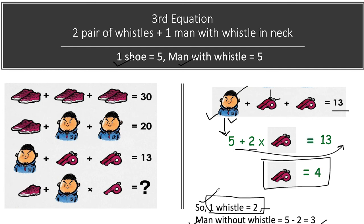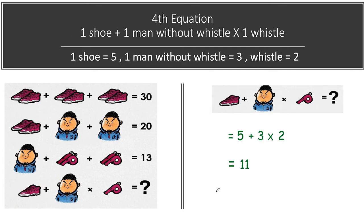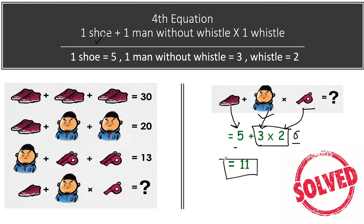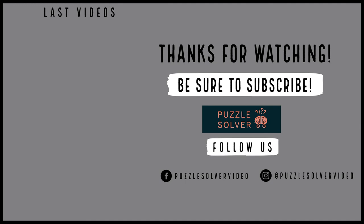Now we can put all item values into the final equation. In the final equation, we have one shoe plus one man without a whistle, multiplied by a whistle. Shoe equals 5, man without a whistle equals 3, and whistle equals 2. Following BODMAS, we solve the multiplication first: 3 times 2 equals 6. Then 6 plus 5 equals 11. Puzzle solved!